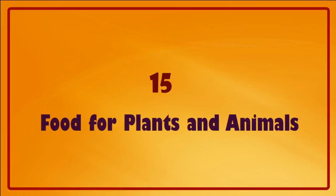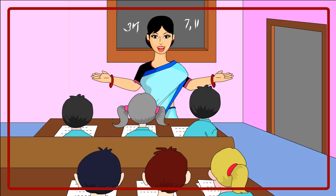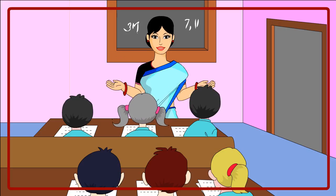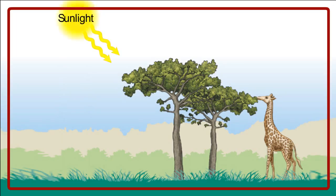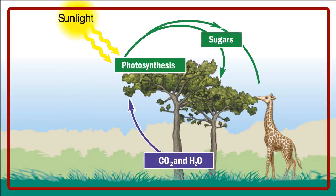Lesson 15: Food for Plants and Animals. Hello children, can you name the living things that make their own food? Yes, plants make their own food using the energy from the sun. This process is called photosynthesis.